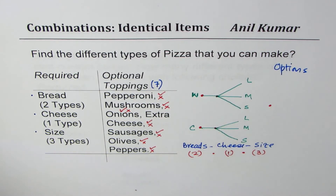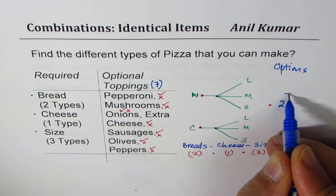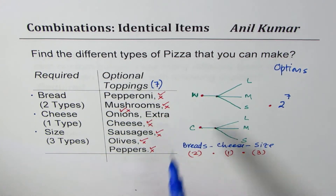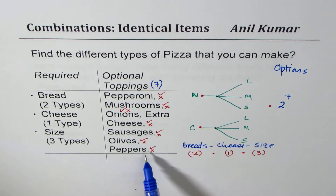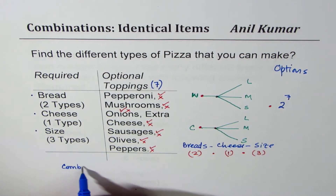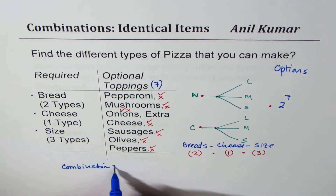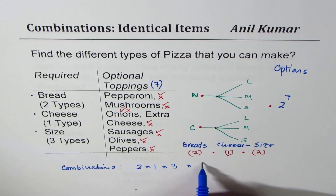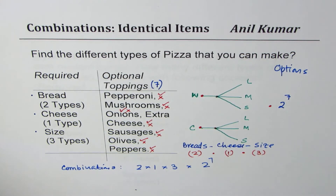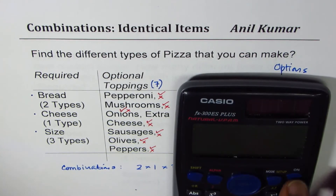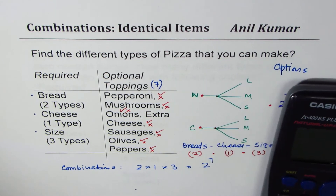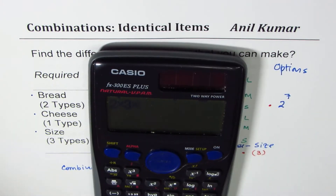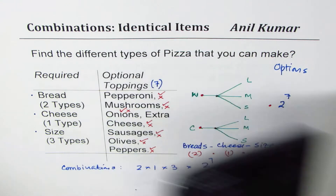So for the optional items, since for each of the seven toppings we have two choices, that gives two to the power of seven total option combinations — two times two times two, seven times. Therefore the total number of combinations is the product of required and optional parts: two times one times three times two to the power of seven.